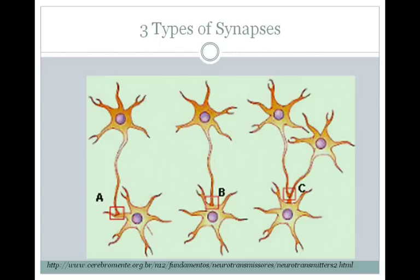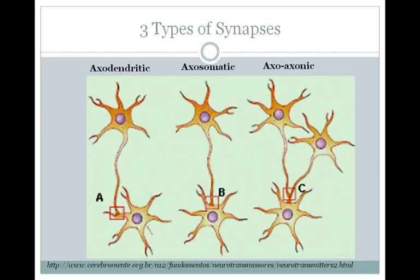There are three main types of synapses in the nervous system. The axodendritic synapse, shown here, where the axon from the presynaptic cell synapses onto the post-synaptic dendrite. Second, you have an axosomatic synapse, where the axon from the presynaptic cell synapses onto the soma, or cell body, of the post-synaptic cell. And finally, you have an axoaxonic synapse, where the axon of the presynaptic neuron synapses onto the axon of the post-synaptic neuron.